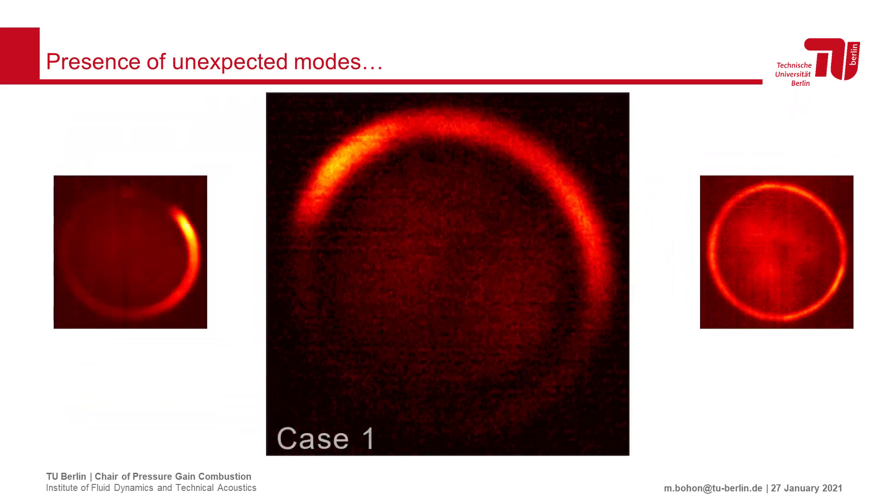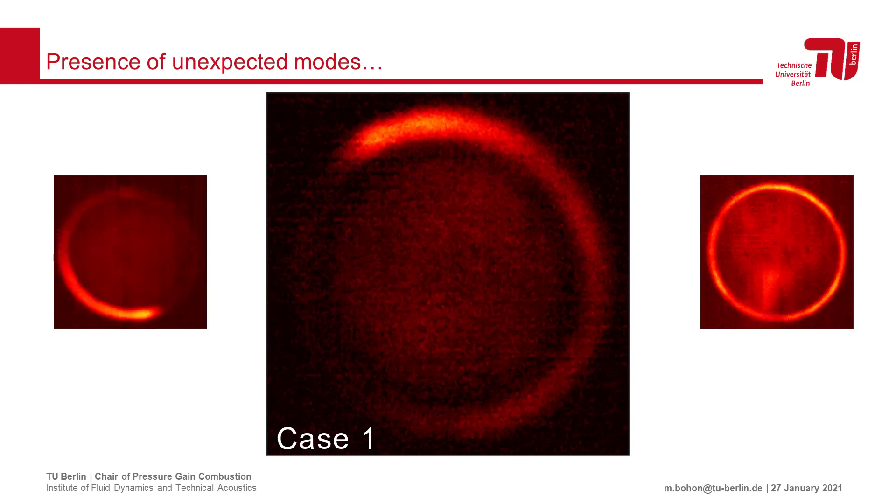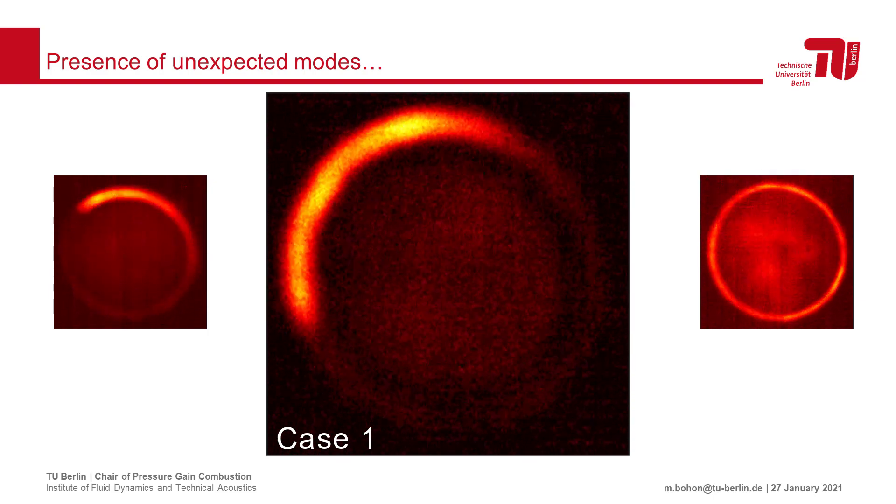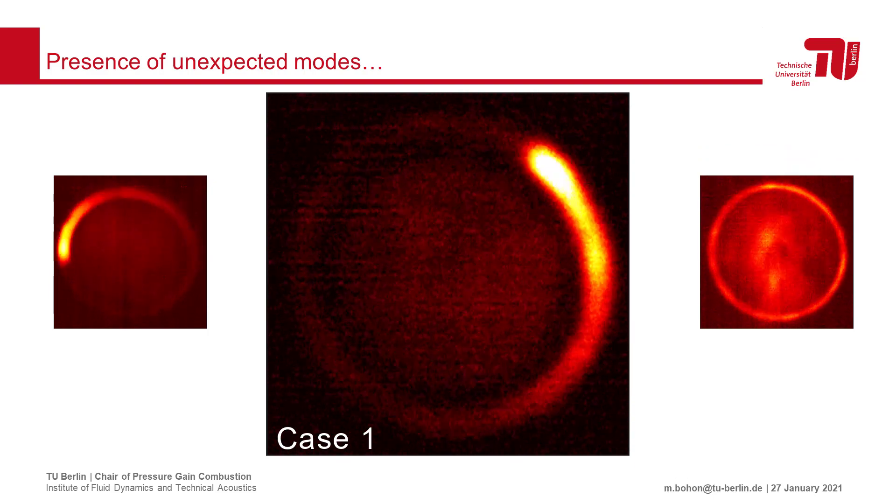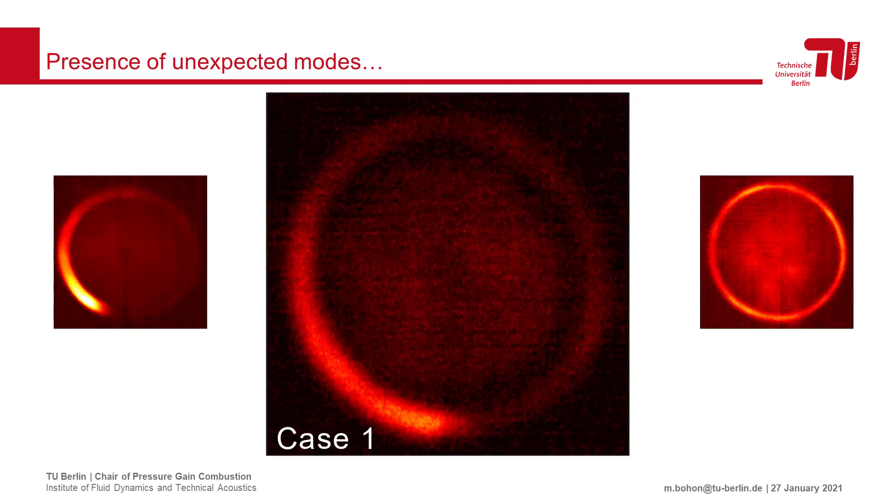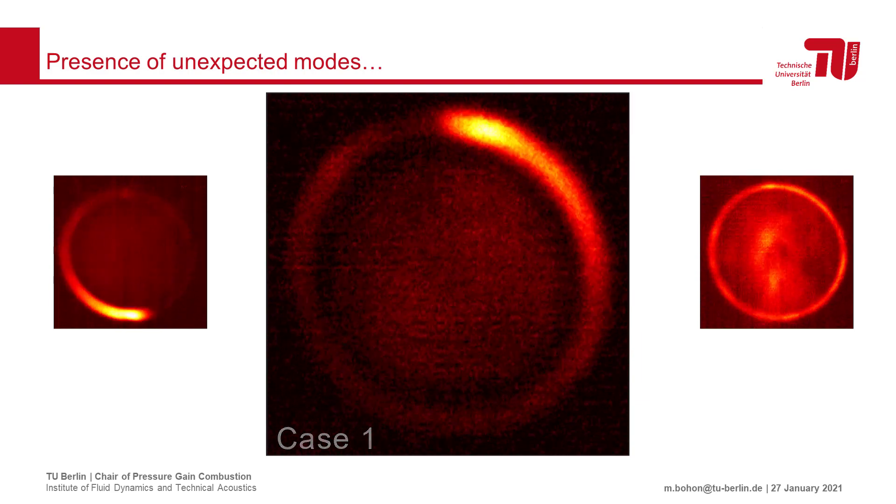In case one, the primary detonation wave is joined by a counter-rotating secondary wave. While it is difficult to observe the proposed longitudinal characteristics in this case from the video, we will shortly show how the longitudinal mode is expressed in the pressure traces.